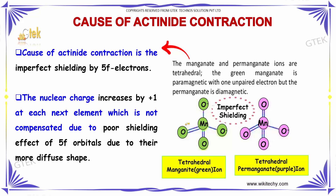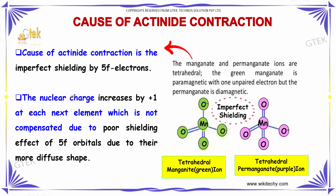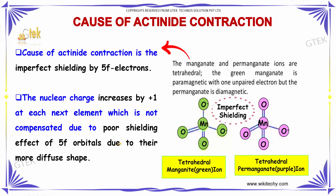The cause of actinide contraction is the imperfect shielding by 5f electrons. The nuclear charge increases by +1 at each successive element, which is not compensated due to the poor shielding effect of the 5f orbitals due to their more diffuse shape. You are able to see the imperfect shielding of the elements.